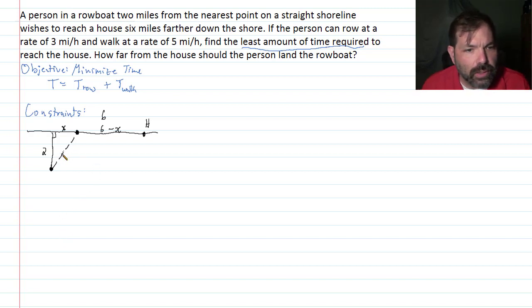Now this distance here, the actual distance that I'm going to row, is then from the Pythagorean theorem, would then be the square root of x squared plus four.